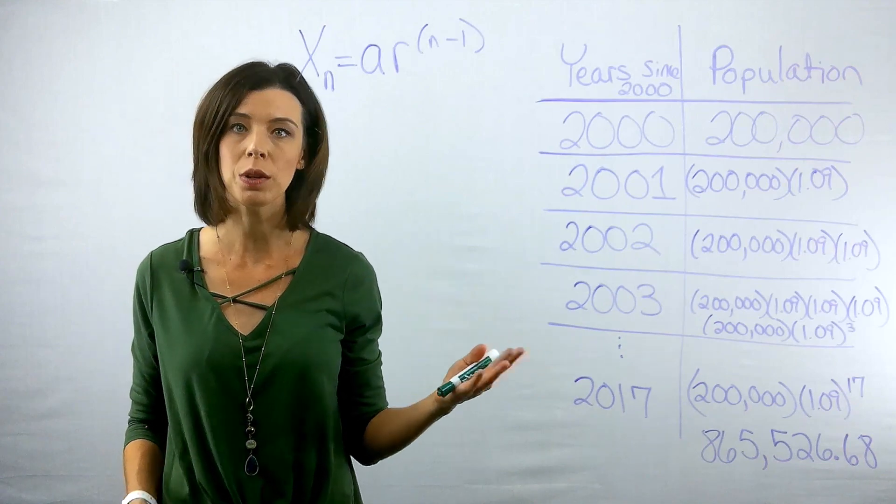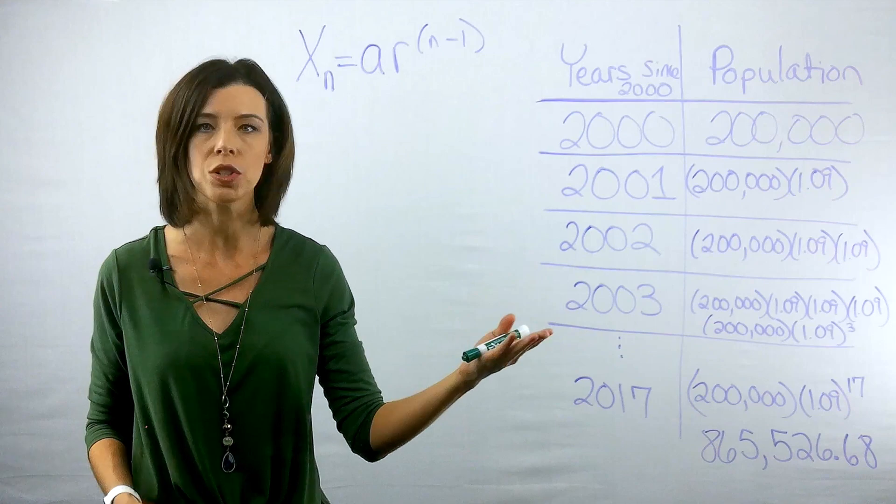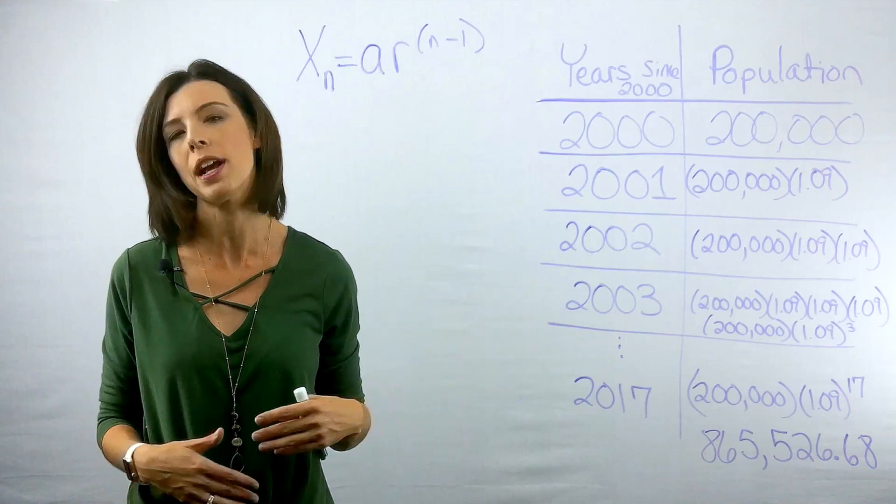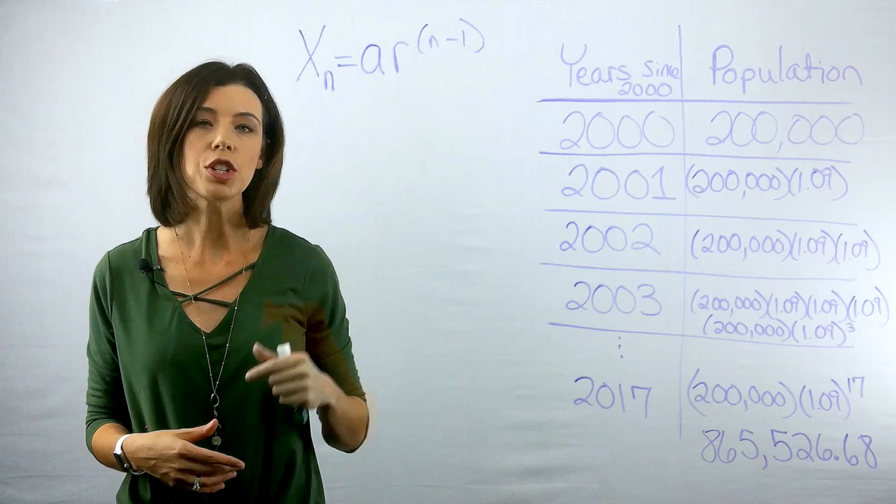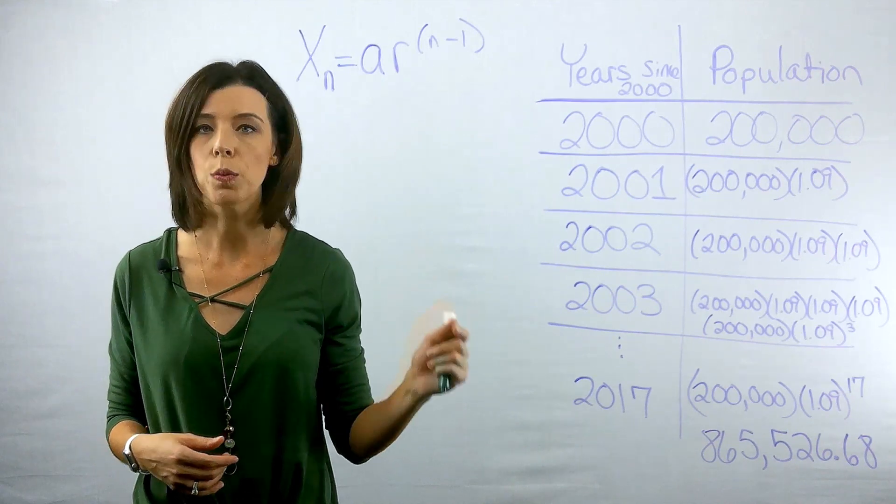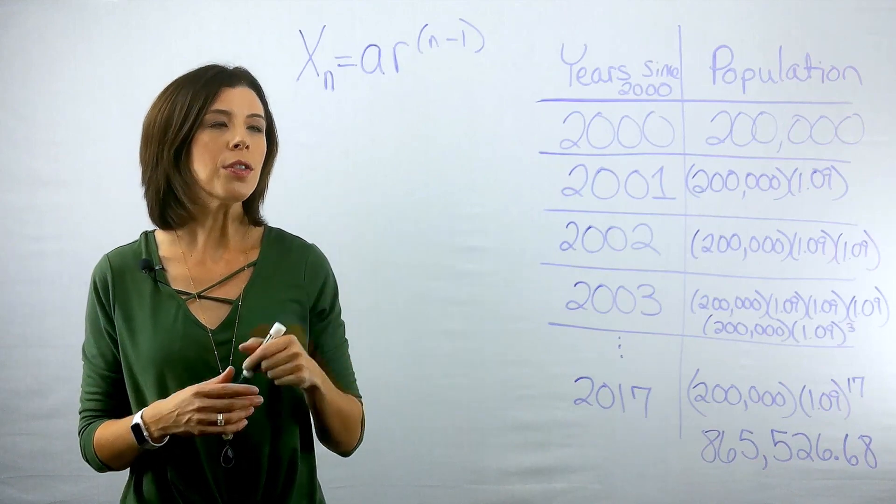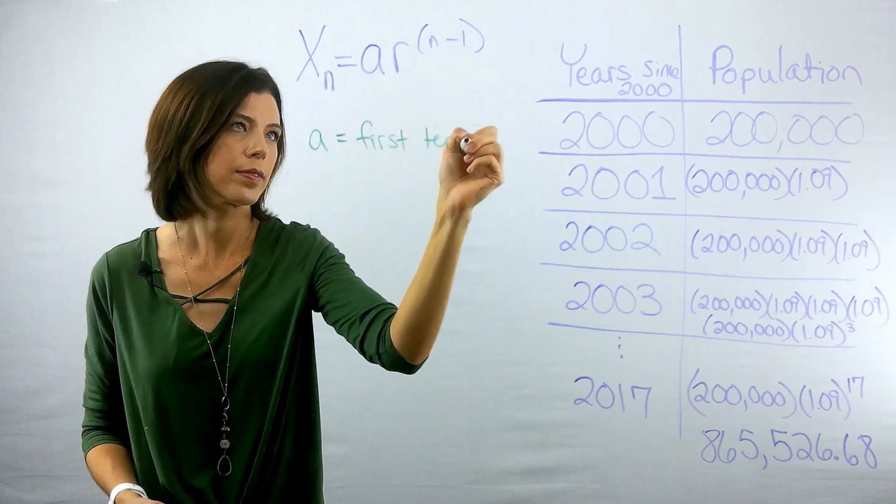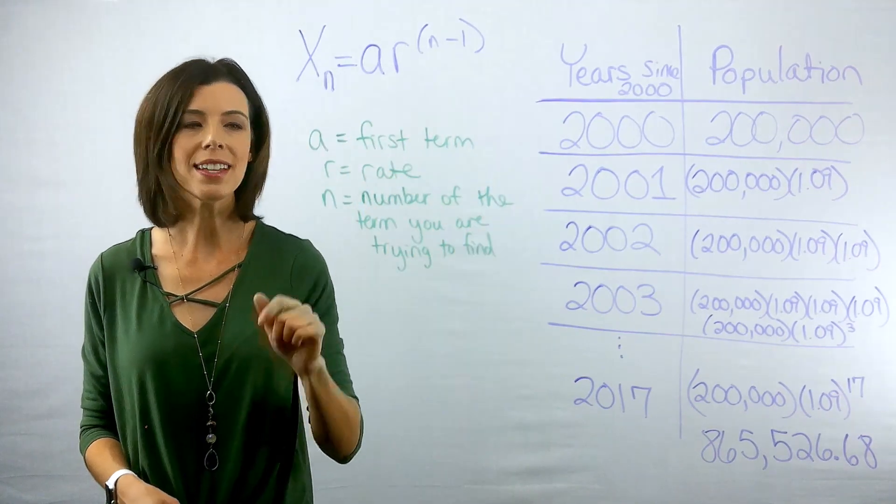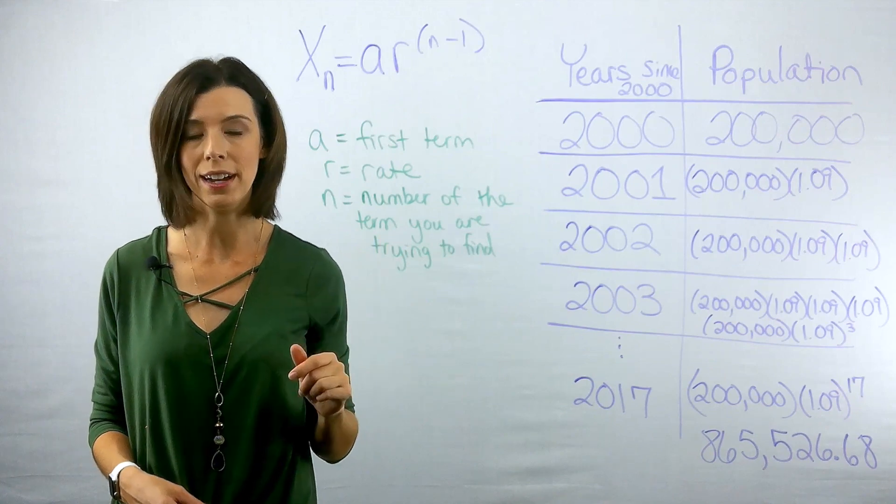However, a geometric function would allow you to say, I'd like to know what's in the middle between 2002 and 2003. Where's the population at? We can find any point on that graph versus doing a geometric sequence we are looking for just one individual year and at the end of that year. So we know that for the geometric sequence, a is the first term. So we can see that r is our rate, n is the number of the term that you are trying to find.